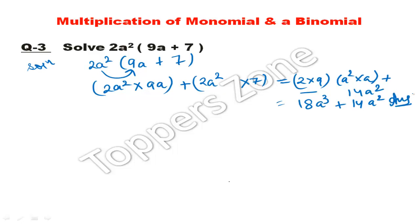Next question. Solve 2x(x² + 5x + 6). This is also the same way. This is a monomial and the whole term is binomial, degree 2. So 2x(x² + 5x + 6).